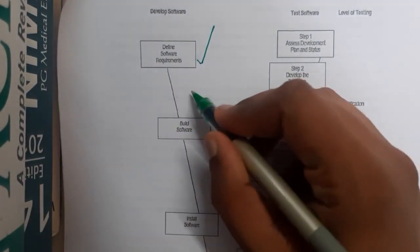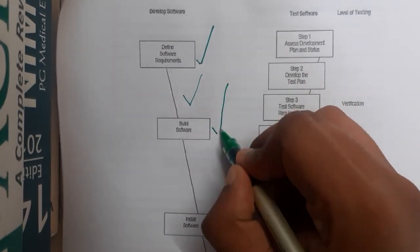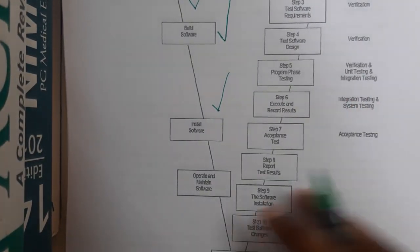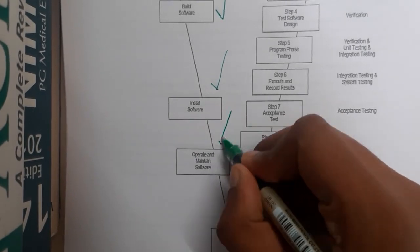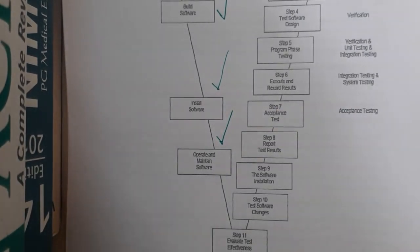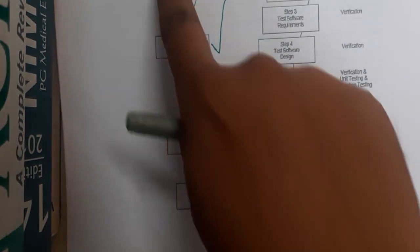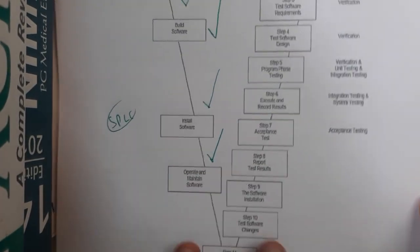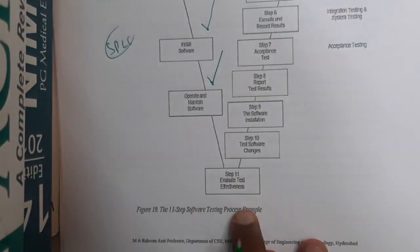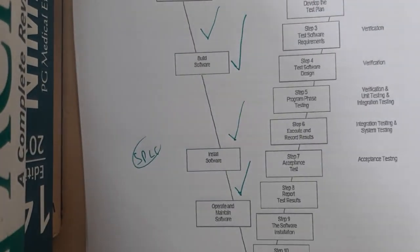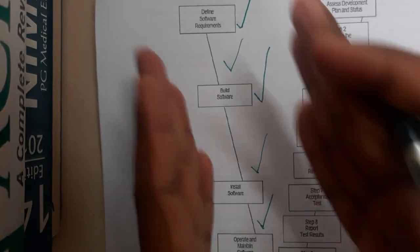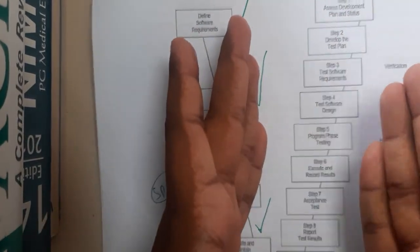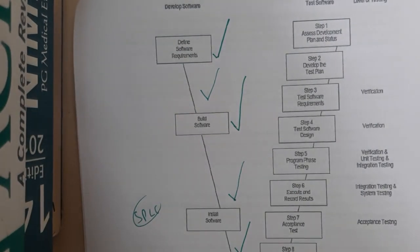In development, you first collect all requirements, then design things, then build the software, then deploy it, and finally maintain the software — validating that all functionalities are working properly. You can write as many steps as you want following any SDLC process. For the testing process, the same 11 steps are drawn one after the other, forming your V-shape.